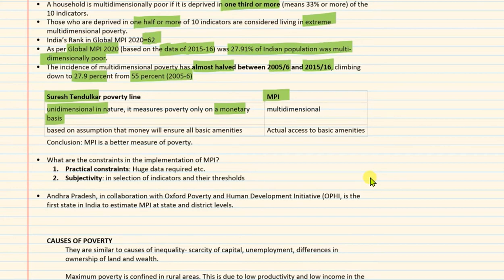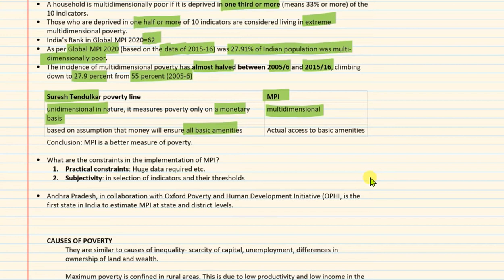MPI is based on three dimensions: health, education, and standard of living. The Tandulkar Committee poverty line is based on the assumption that money will ensure all basic necessities — that if a person earns above the poverty line, they have enough money to fulfill all their basic amenities. But in reality this is not always the case. MPI, on the other hand, is based on actual access to basic amenities. Household surveys are conducted, actually asking: do you have a TV, a fridge, how many educated people are in the household, how many are undernourished? So MPI is calculated on the basis of actual access to basic amenities.